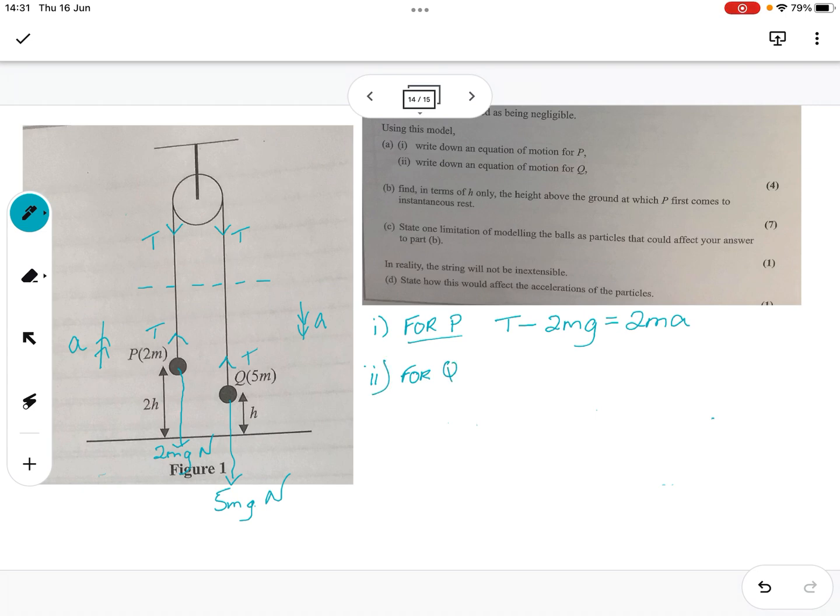For Q, we're going downwards. So the weight is going downwards, same in positive. In the opposite direction is tension, so that's got to be negative. And that equals its mass, which is 5M, times the same acceleration. So that's for Q. That's question 4. Done.